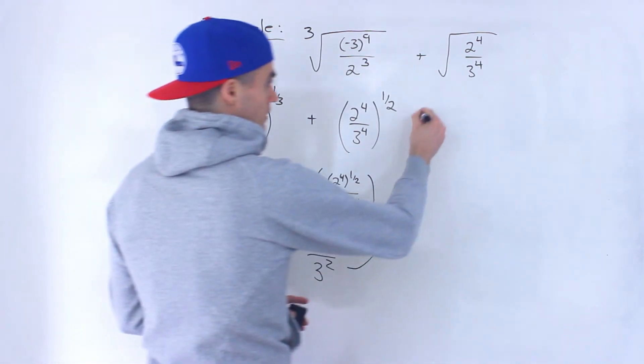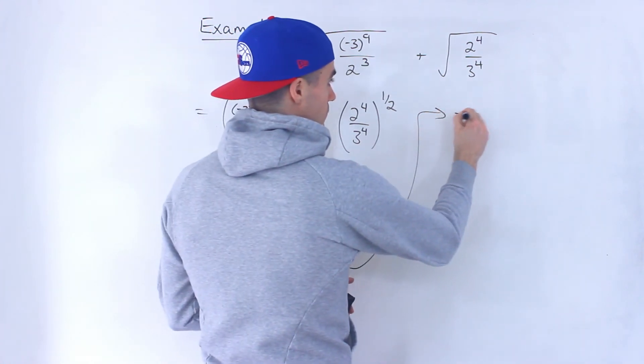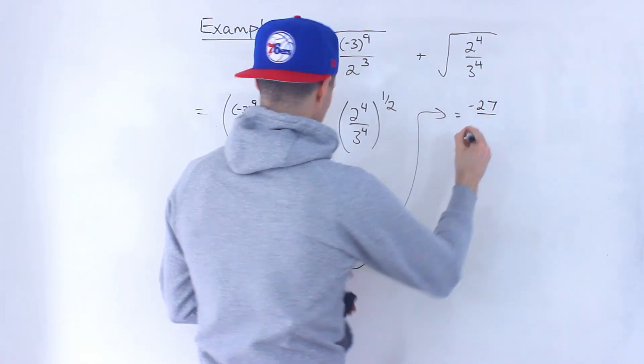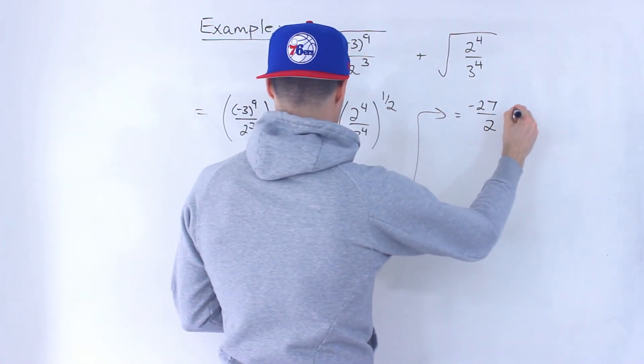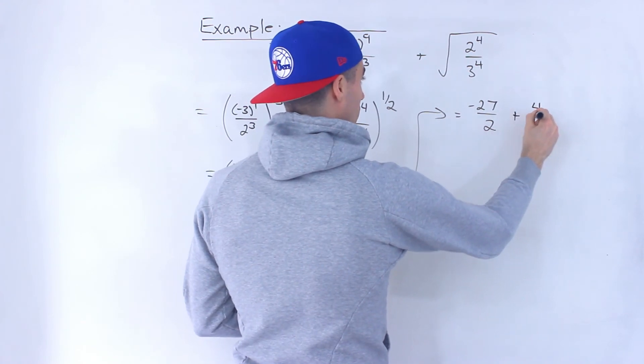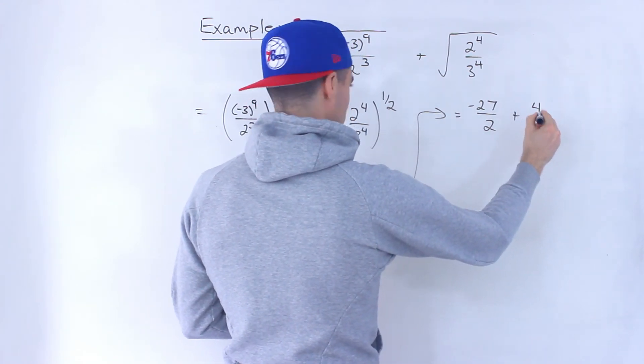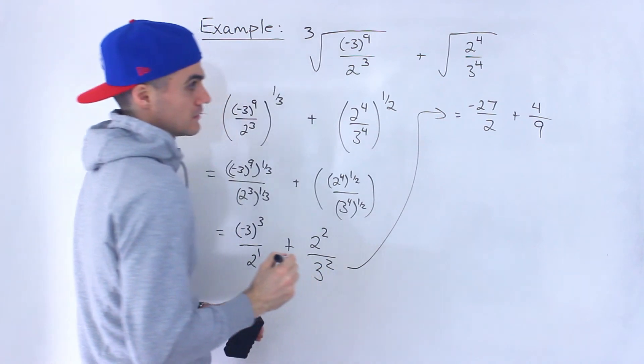And so now, continuing this, negative 3 to the power of 3 is negative 27. 2 to the power of 1 is 2. Then we got 4 over 9.